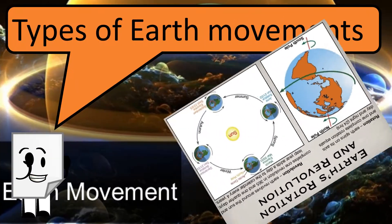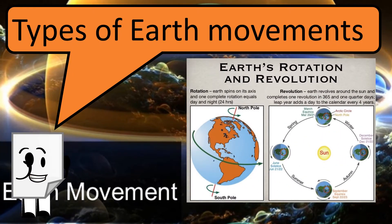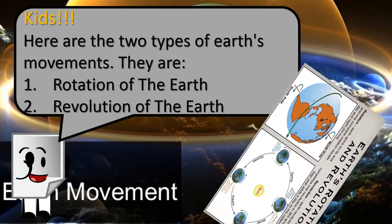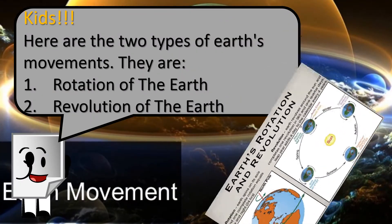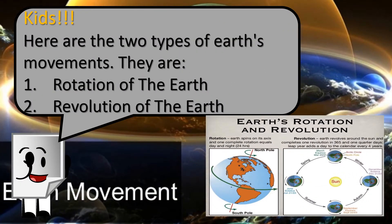Types of Earth's Movement. Kids, here are the two types of Earth's Movement. They are: 1. Rotation of the Earth, and 2. Revolution of the Earth.